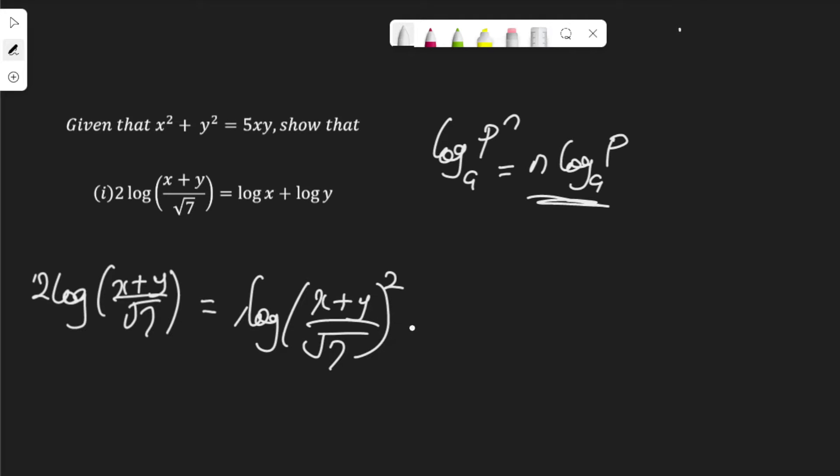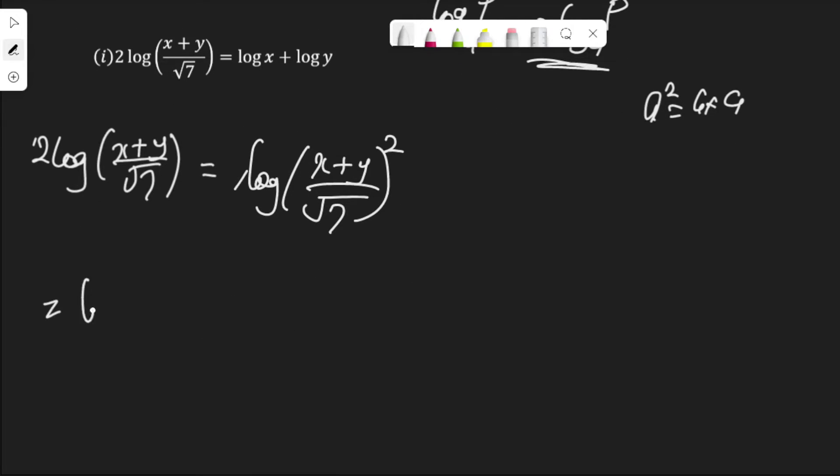And we know that n to the power of 2, for example, a squared is a times a. Which means this (x plus y) over root 7 squared will be, let's expand that. So, we have 2 log (x plus y) over root 7 multiply by (x plus y) over root 7. And x times x is x squared. Now, I have 2 log x squared.